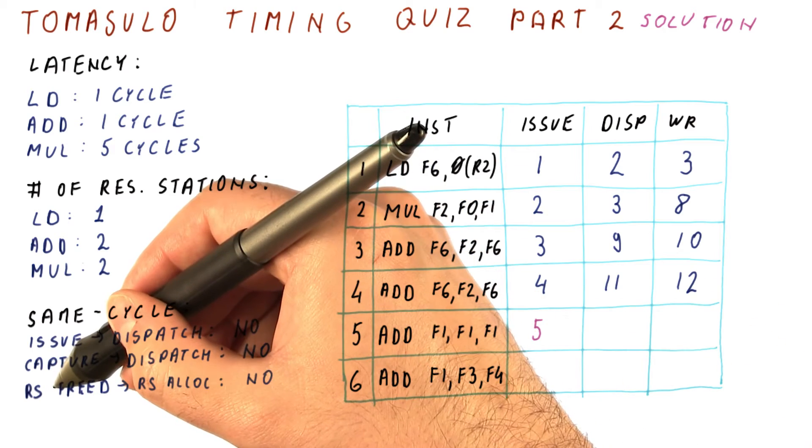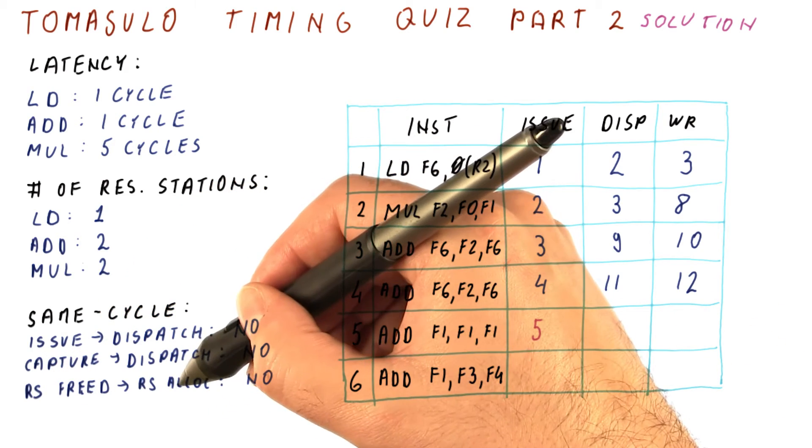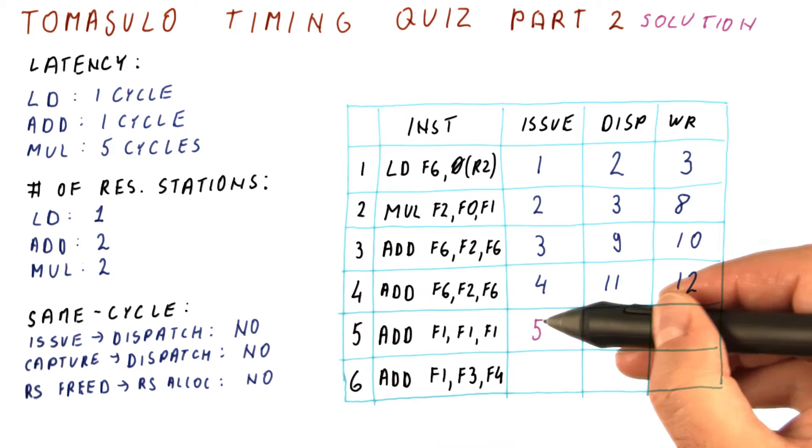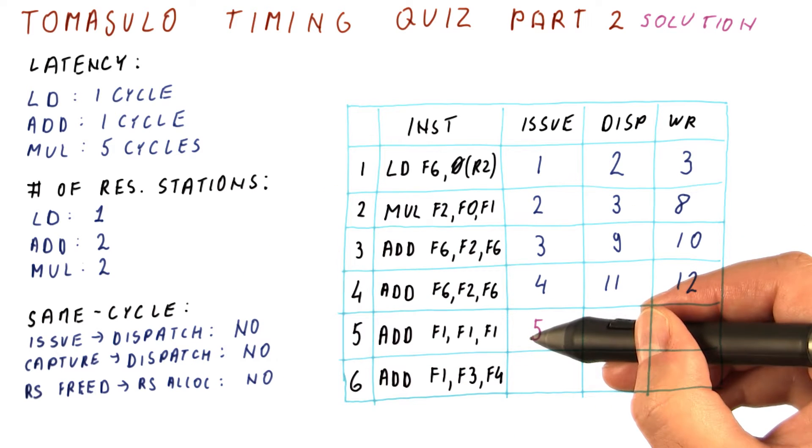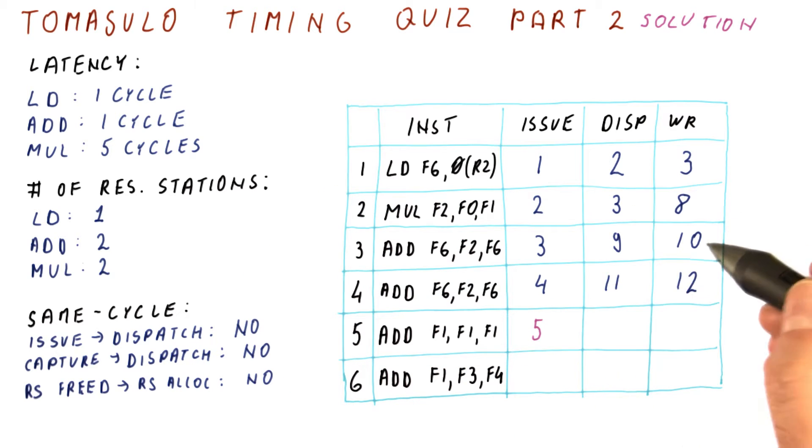Note that a reservation station needs to be freed a cycle earlier than when we allocate it, so if we are going to use it in cycle five, it needs to be freed in cycle four.